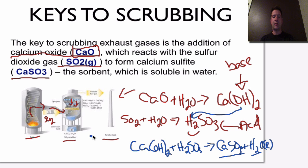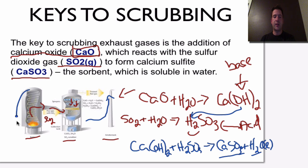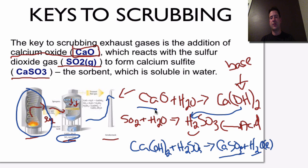Any other gases are released through the smokestack. That's the process: we take the sulfur dioxide from the burner, it moves through the flue into the scrubber itself, these two processes occur, and we see the combination and produce water.